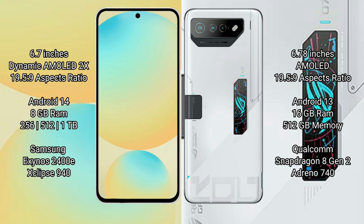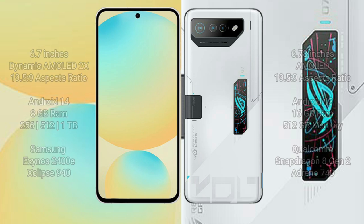The Asus ROG Phone 7 Ultimate comes with 16GB RAM and 512GB internal storage. It is powered by the Qualcomm Snapdragon 8 Gen 2 processor with an Adreno GPU.